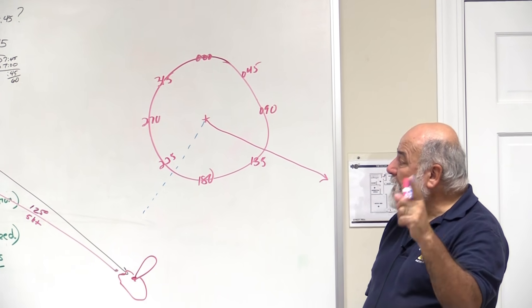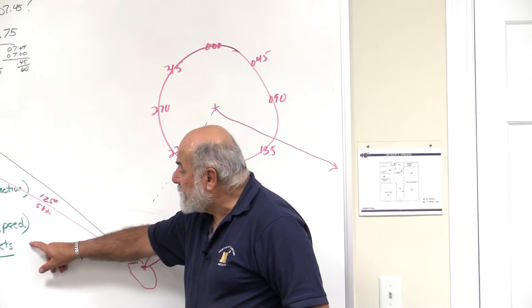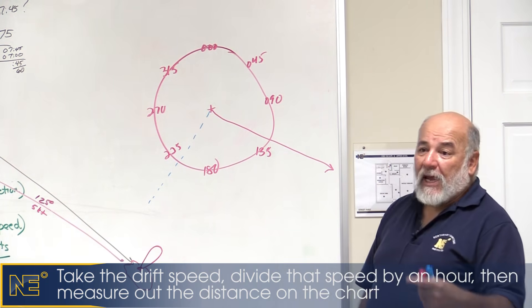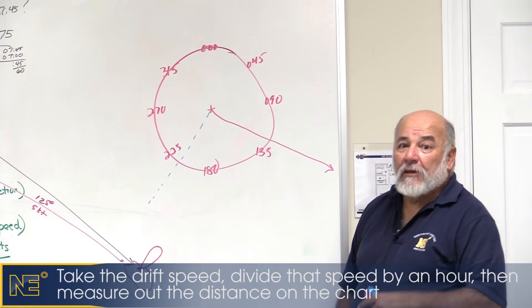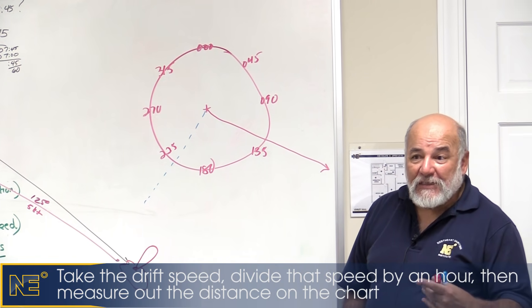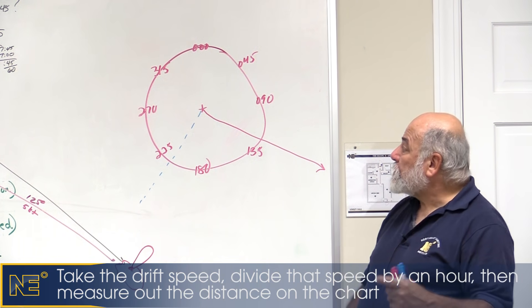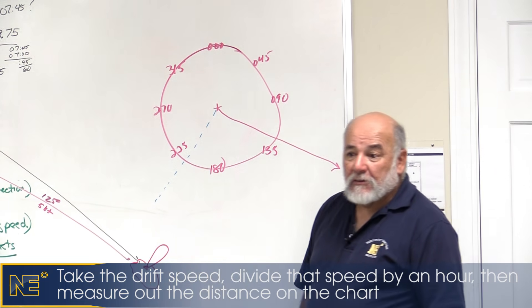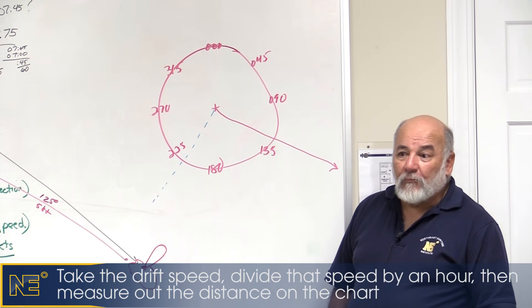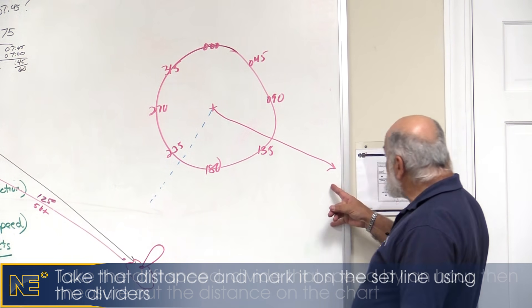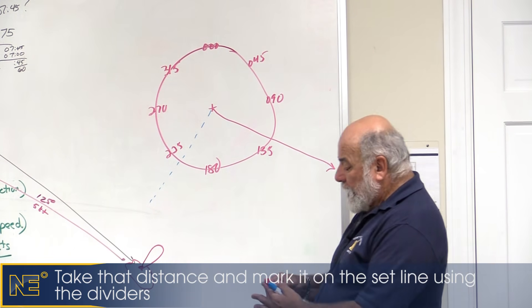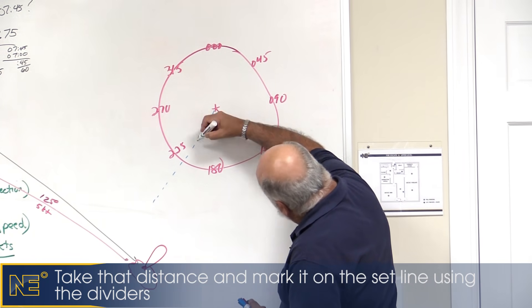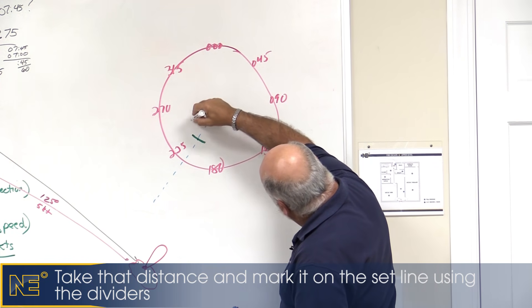Speed, the speed of the drift, how fast is the current running? It's running at .8 knots. For the sake of course to steer, base everything on an hour because it's easy. How far would I go in an hour at .8 knots? .8 miles. So I take off the side, .8 miles. I take my handy dandy divider, I put .8 miles, and I say .8 miles from here to here, .8 miles.